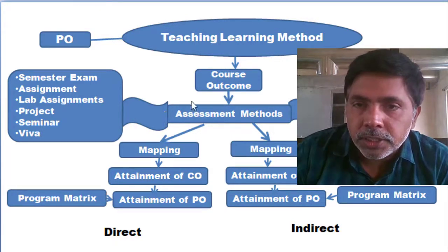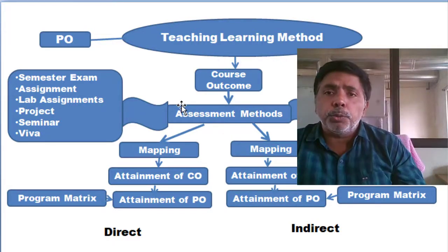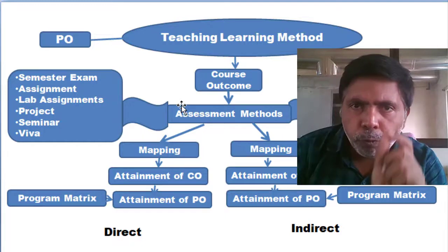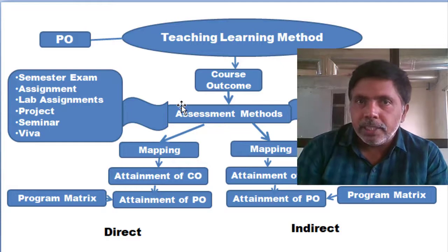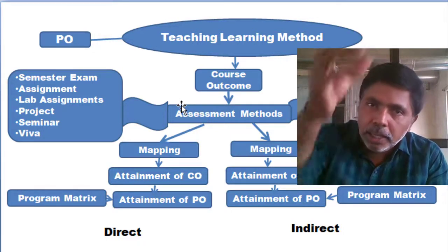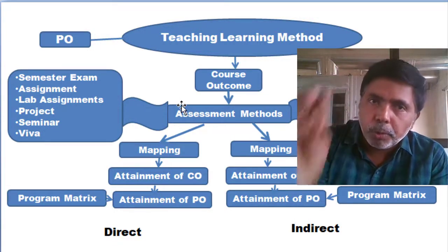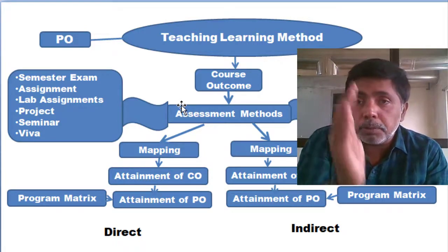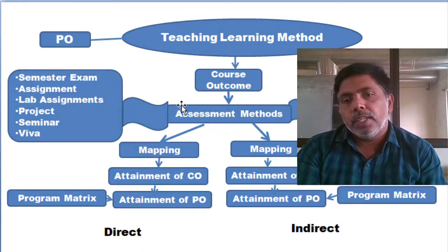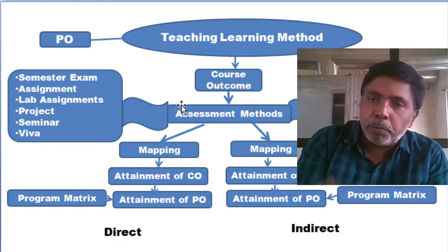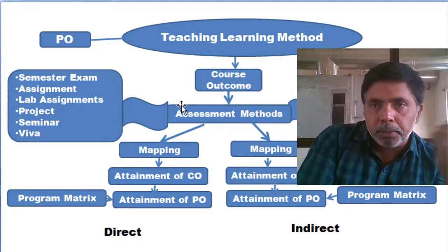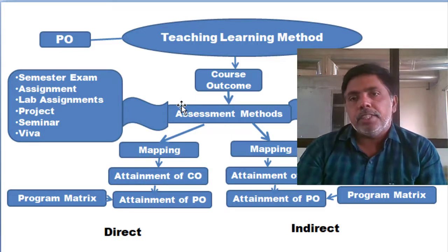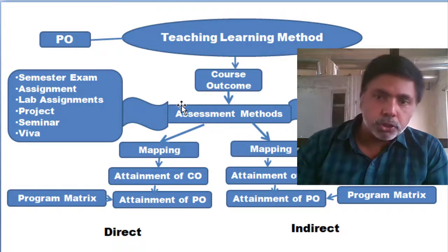The assessment methodology has two types: direct and indirect. We use indirect because the direct examination system primarily covers PO1 to PO5 — the domain-dependent outcomes. The question bank mostly addresses PO1 to PO5. For PO6 to PO12, the domain-independent program outcomes, indirect methods are needed. For indirect methods we use alumni feedback and exit surveys.